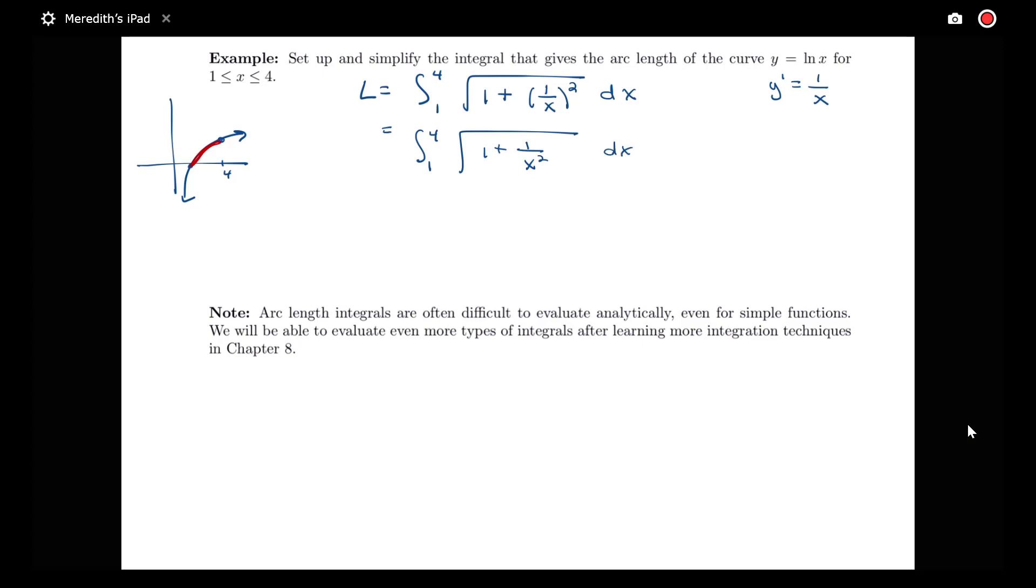So maybe I could just get a common denominator out of that. Maybe that would help me a little bit. So this would be x squared plus 1 all over x squared.